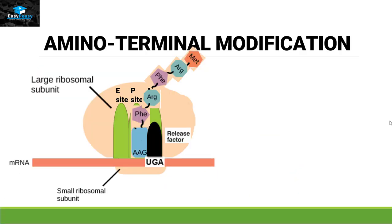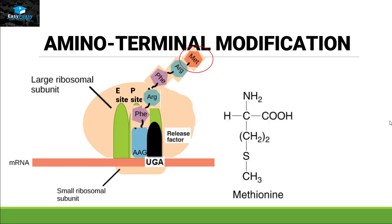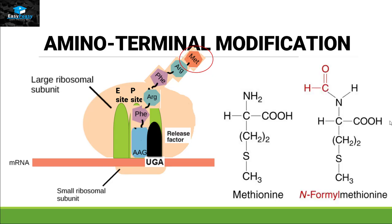Let's start with amino terminal modification. As we know, when the process of translation starts, the first codon is AUG and it codes for methionine. If it's a eukaryotic organism it will be methionine, and if it's a prokaryotic organism it might be N-formyl methionine. In both situations, methionine is the first amino acid that is always generated in a protein.